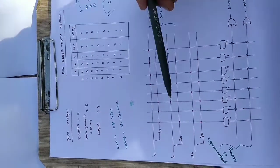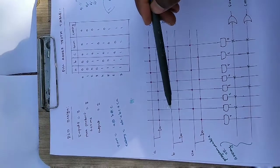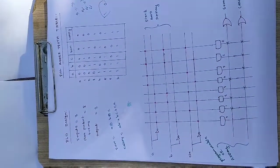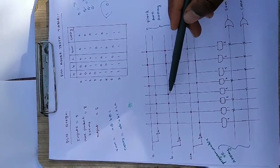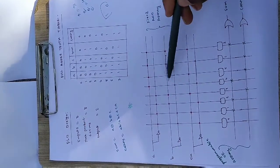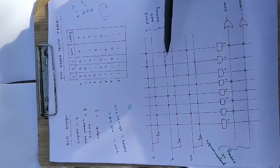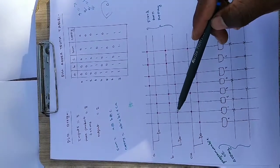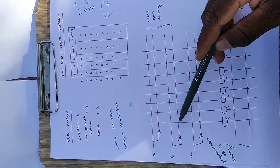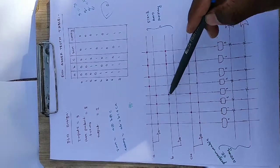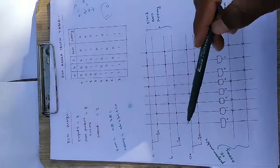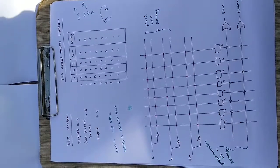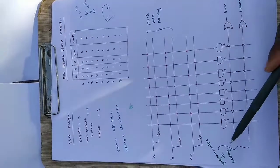For input B: the first two terms are 0, so do not solder positions 1 and 2; the next two terms are 1, so solder positions 3 and 4; again 0 0, so leave positions 5 and 6; then 1 1, so solder positions 7 and 8. For B-bar, solder wherever B was left blank. Follow the same logic for C and C-bar. Once the AND array is complete, half the work is done.